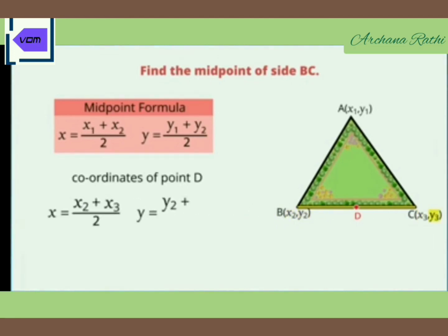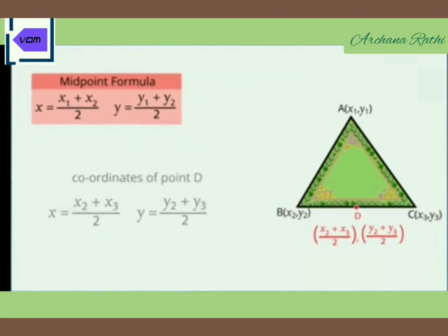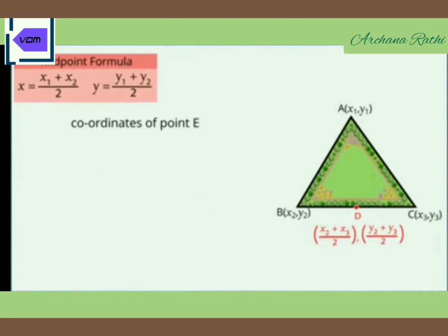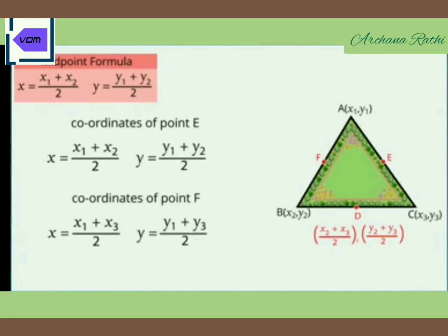The midpoint formula is x = (x1 + x2)/2 and y = (y1 + y2)/2. By observing the diagram, you'll get x = (x2 + x3)/2 and y = (y2 + y3)/2. These are the coordinates of D. Similarly, you can find the coordinates of points E and F.